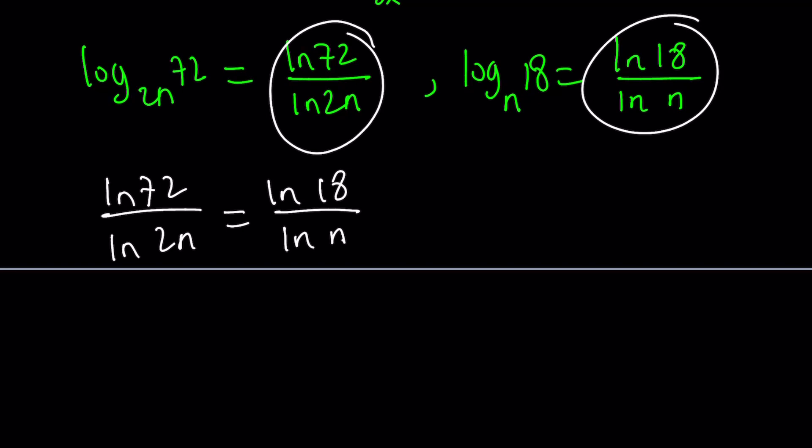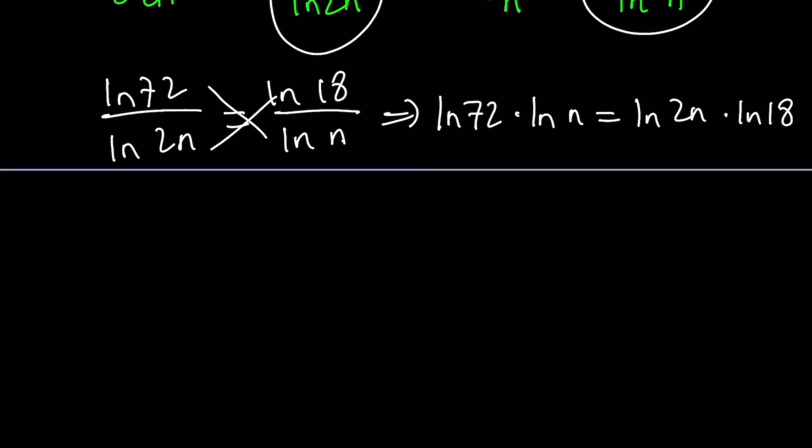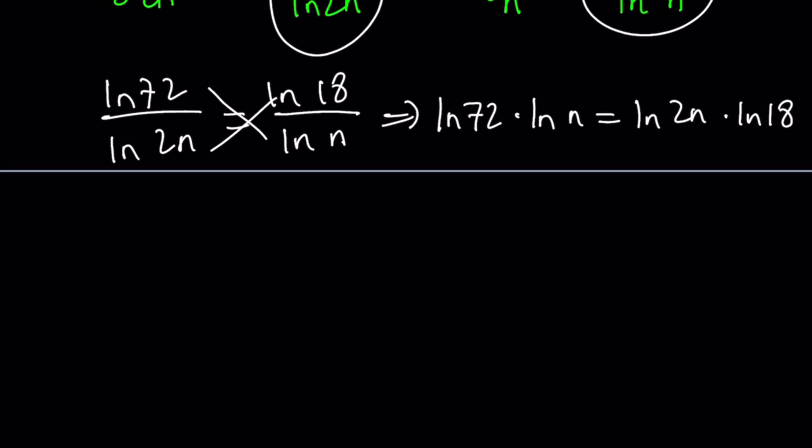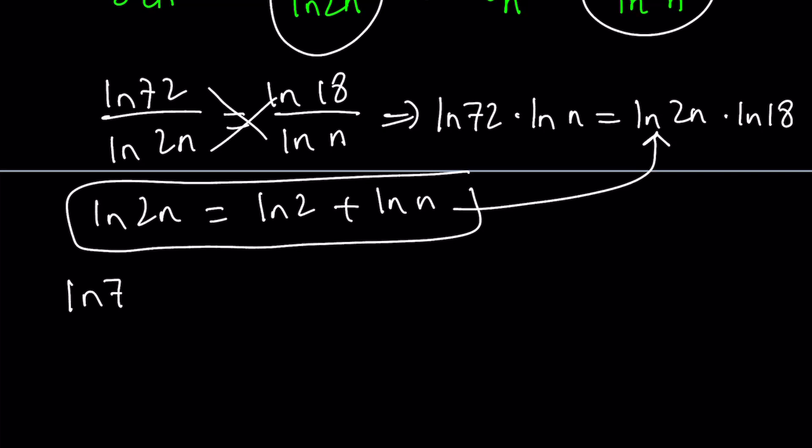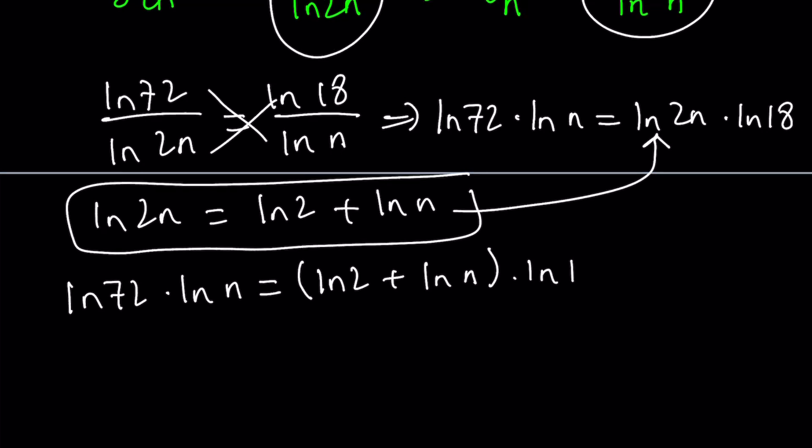The first step should be cross multiplication. From here, we get ln 72 times ln n equals ln 2n times ln 18. Now, ln 2n can be written as ln 2 plus ln n using the product property, and we can substitute that here.